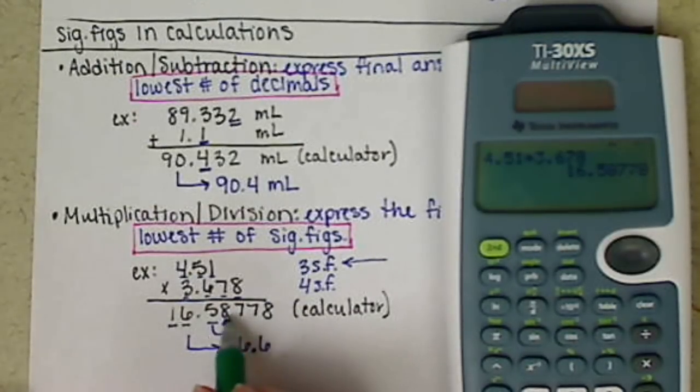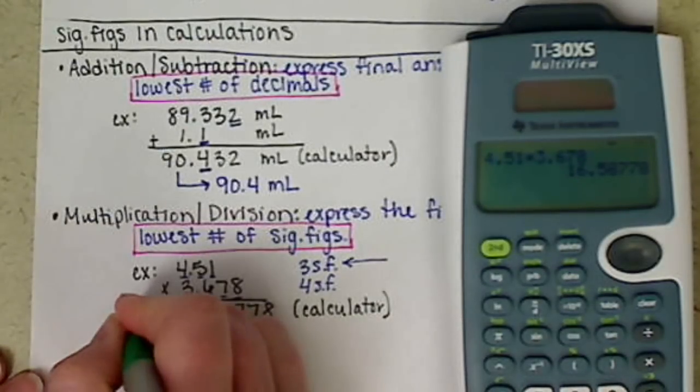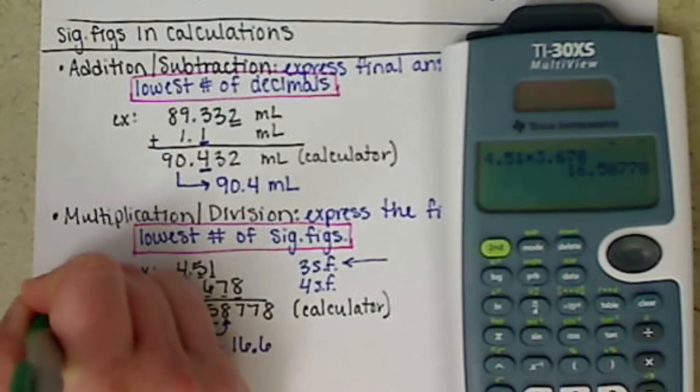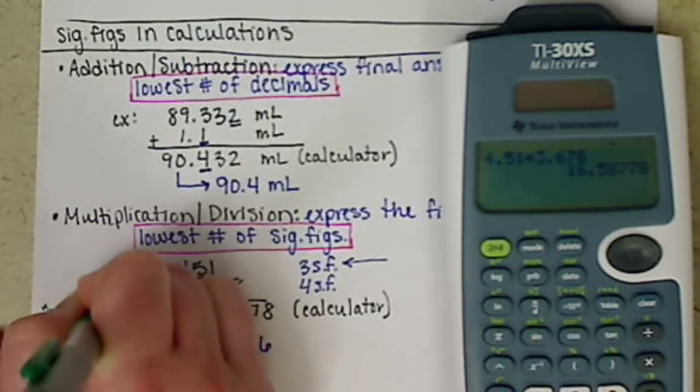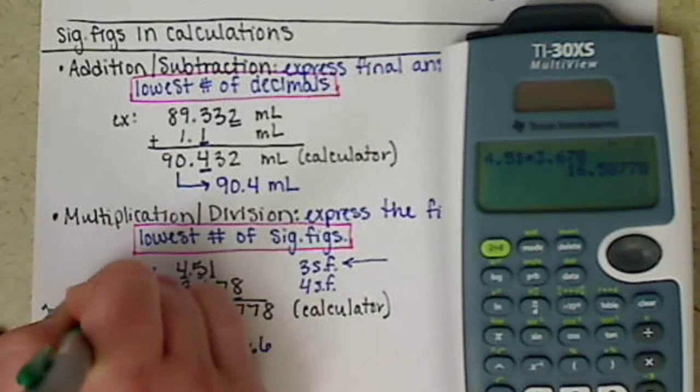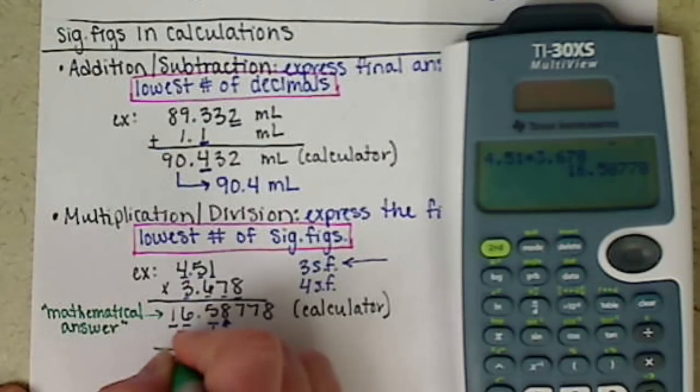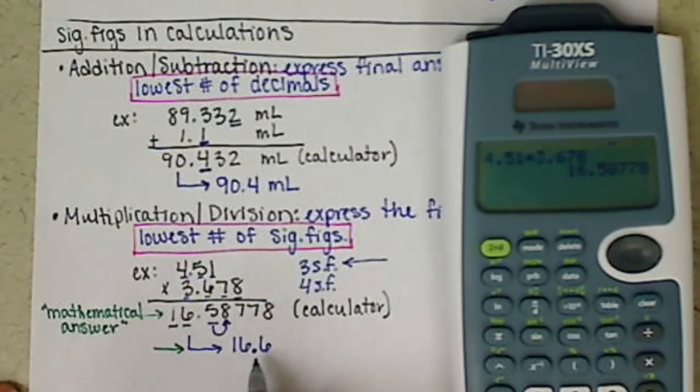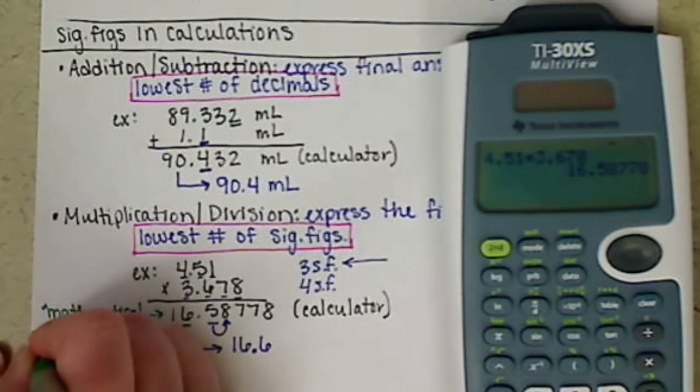So this first number here, I refer to it kind of two different ways. I'll either call this the calculator answer, or this one we can call the mathematical answer. And our second value here, our 16.6. This would be our scientific answer.